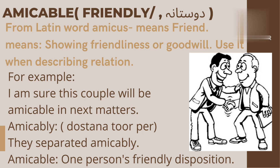For example: 'They separated amicably' — وہ دوستانہ طور پر جدا ہوئے، یعنی بہت اچھے طریقے سے انہوں نے ایک دوسرے کو goodbye کہا. The next related meaning is: 'amicable' describes one person's friendly disposition — ایک انسان کا دوستانہ مزاج. جب آپ personality کے بارے میں بات کر رہے ہوں، جو شخص دوستانہ مزاج رکھتا ہو، it could be used for him.